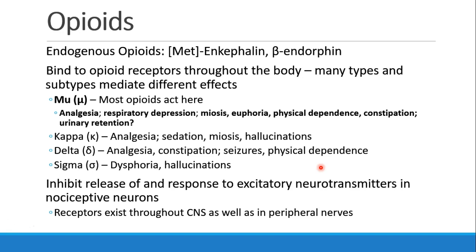Opioids can inhibit the release of excitatory neurotransmitters and the response to excitatory neurotransmitters in nociceptive neurons, which are the neurons that transmit pain signals. Opioid receptors are found throughout the CNS as well as in peripheral nerves.